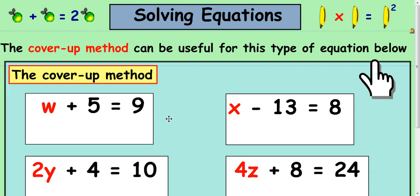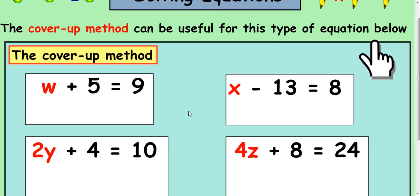Now, the first method that you ever work out how to solve equations with is called the cover-up method. I'm not going to spend too long on it. I'll show you how it works. It's good for a particular type of equation, but it's not good in the long term, so we tend to go away from this method.